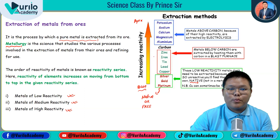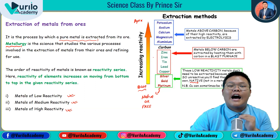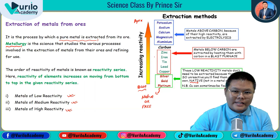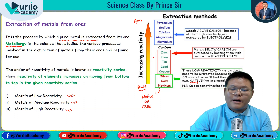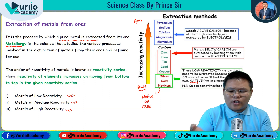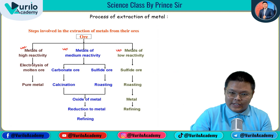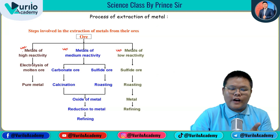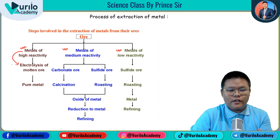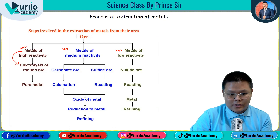High reactivity metals include potassium, sodium, magnesium, aluminum, and calcium. It is important to remember that metals of high reactivity require electrolysis of molten ore to convert and extract pure metal. Electrolysis is an important point to remember.